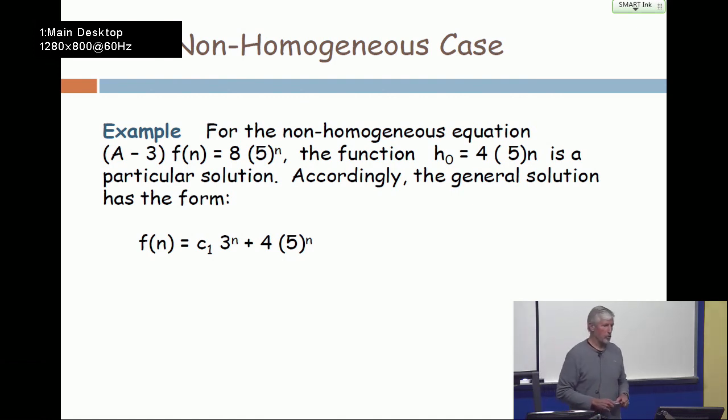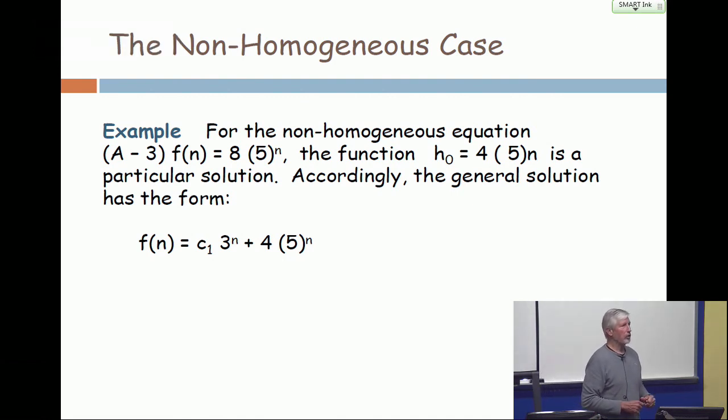So the general solution is just the particular solution, 4(5)^n, plus the solution to the homogeneous equation. Now the homogeneous equation is polynomial of degree 1, it has one root, that root is 3. So the general solution is the constant C₁(3)^n. The particular solution plus the general solution.